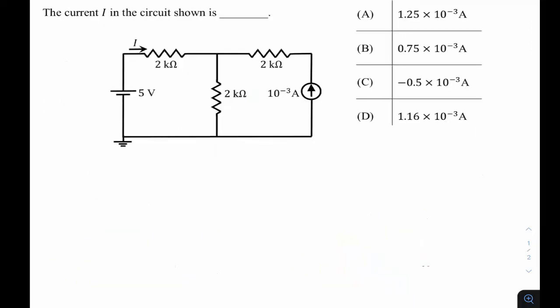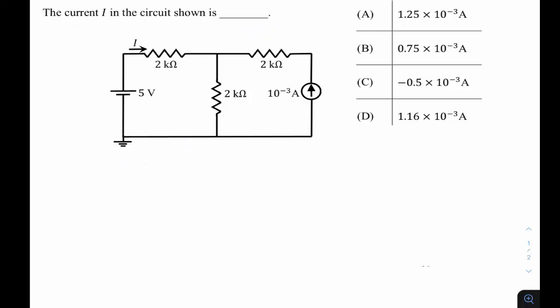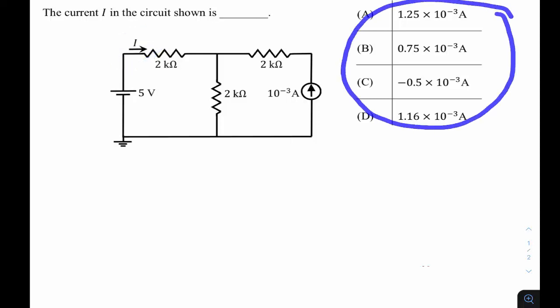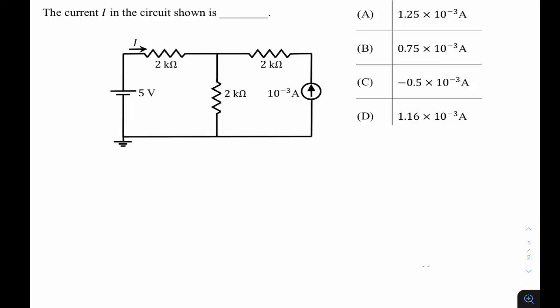The next question is from GATE 22 ECE, network subjects, fundamental topic. The question gives a circuit and asks for the current I. Although there can be many approaches, one straightforward approach: concentrate on a particular node where this current is I (known) and another branch carries 10⁻³ amperes, because a resistor in series with a current source does not affect the branch current.